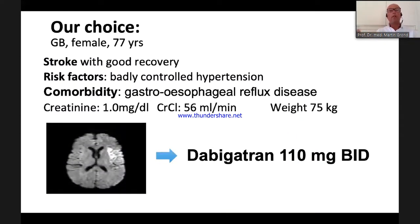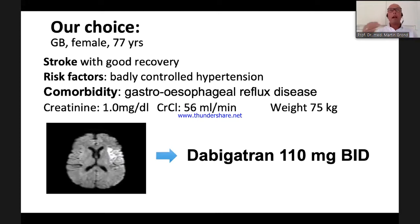Going back to my patient: she is 75 years old so I have the choice; she had a good recovery; she has poorly controlled hypertension and reflux disease. I discussed this with the patient and we chose dabigatran 110 mg — a good choice. When I discuss anticoagulation with patients, they always ask — having read about it — do you have an antidote? With warfarin I have to say no; with dabigatran I can say yes.